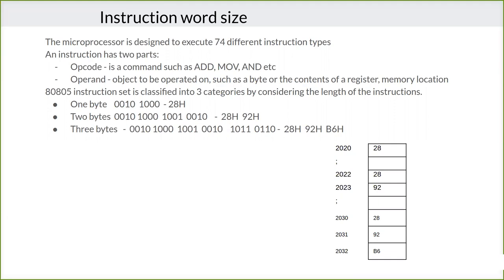The opcode acts on some operands. The operand may be a register or a memory location. So those are said to be the operand. 'Add' means what has to be added; 'move' means what has to be moved — that is the operand. 'Add' and 'move' are the opcode — that is, what operation has to be done.